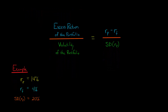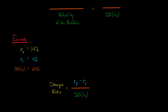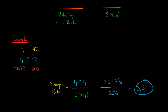Let's do a quick example. If we have an expected return for the portfolio of 14%, a risk-free rate of return of 4%, and volatility of 20% for the portfolio, we just plug in the formula. Expected return of the portfolio 14%, minus the risk-free rate of 4%, that's 10% divided by 20% volatility. So 10% divided by 20% is 0.5 — a Sharpe Ratio of 0.5.